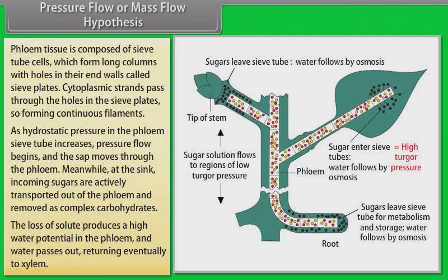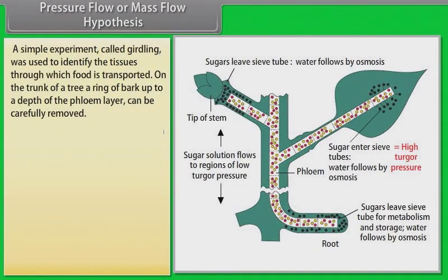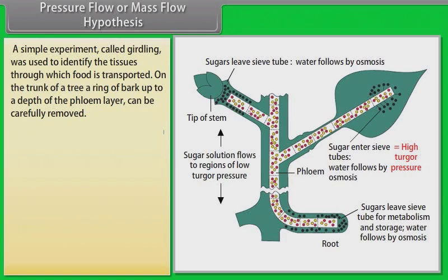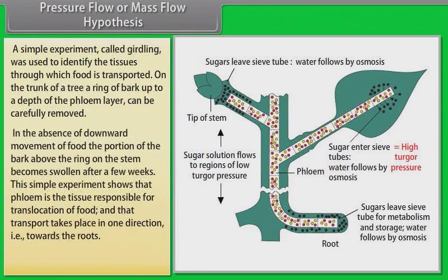Returning eventually to the xylem. A simple experiment called girdling was carried out to identify the tissues through which food is transported. On the trunk of a tree, a ring of bark up to a depth of the phloem layer can be carefully removed. In the absence of downward movement of food, the portion of the bark above the ring on the stem becomes swollen after a few weeks. This simple experiment shows that phloem is the tissue responsible for translocation of food, and that transport takes place in one direction — towards the roots.